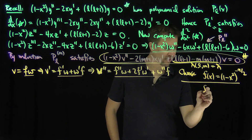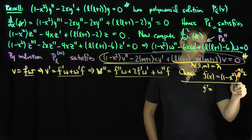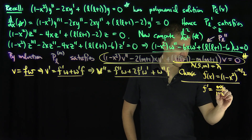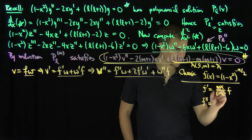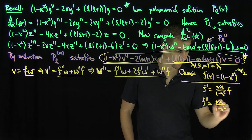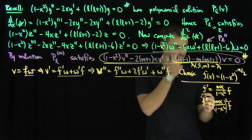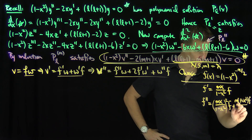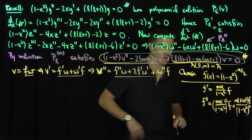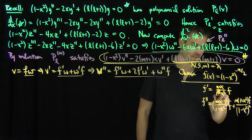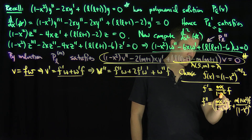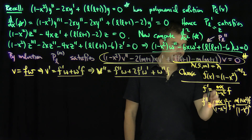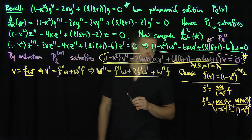With f(x) = (1 - x²)^(-m/2), let's compute f' and f''. We get f' = (mx / (1 - x²))·f. For f'', we get (mx/(1-x²))²·f plus m(1 + x²)·f/(1 - x²)². Notice that f, f', and f'' can all be expressed as multiples of f itself.